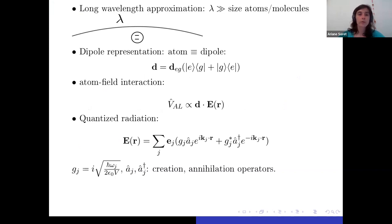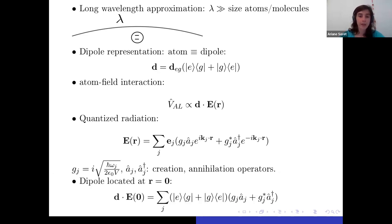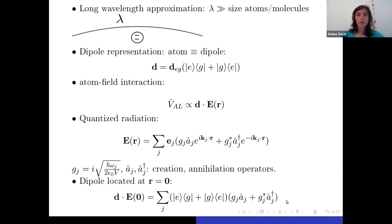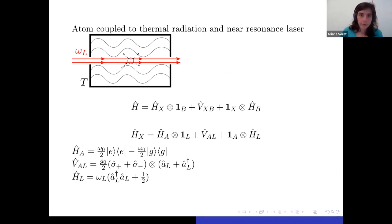Second, we will use a dipole representation for the atom, and in this representation the interaction between the field and the atom takes this simple form. We furthermore assume that all the radiation is quantized, meaning the radiation field is written in this form where a and a-dagger are creation and annihilation operators. Finally, we focus on the case of a single atom interacting with the photons, so we can place that atom at r equals zero and remove any space dependence in our interaction Hamiltonian.